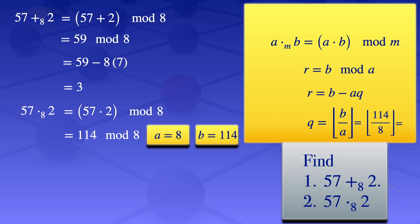We now use the values of a, b, and the quotient to find the remainder, b minus aq. The remainder is 114 minus 8 times 14, and that gives us 2. So 57 times 2 mod 8 equals 2.